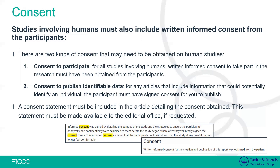If it was verbal consent, you need to provide more information as to why it was verbal — you need to justify why it wasn't written. Secondly, we look for consent to publish identifiable data. We ask that all data included in the article and uploaded to a repository is made anonymous as much as possible. If any data cannot be anonymized and is identifiable, the participant must have signed consent for you to publish that data.